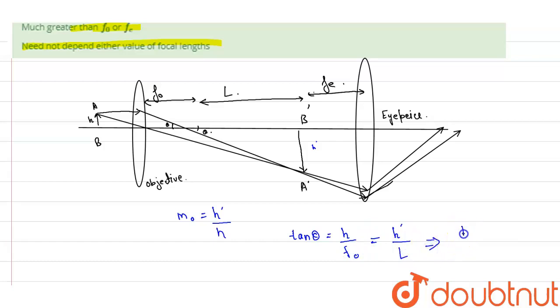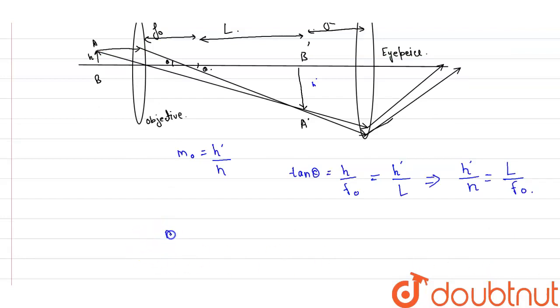And further we can write it down as H dash divided by H should be equal to L divided by F0. So the formula for magnification could be also written as M0 equals L divided by F0. And we have to find out this L.